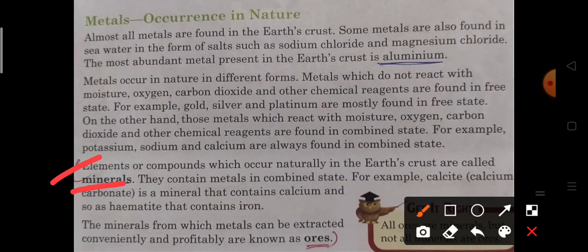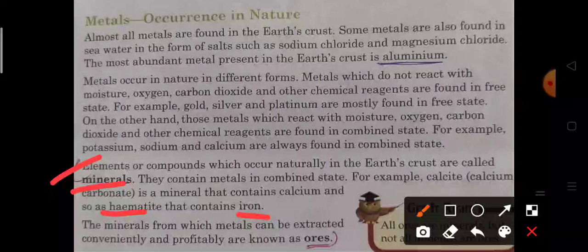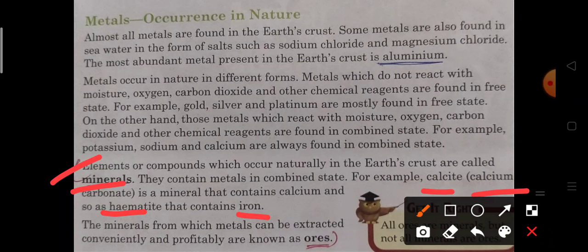Elements or compounds which occur naturally in the Earth's crust are called minerals. Combined metals are always found in combined state. For example, calcite (calcium carbonate) contains calcium and hematite contains iron. The minerals from which metals can be extracted conveniently and profitably, those minerals have been called as ores. We can conclude that all ores are minerals but all minerals are not ores.